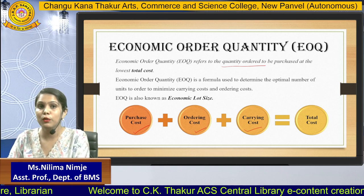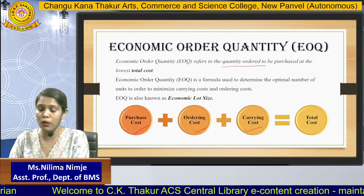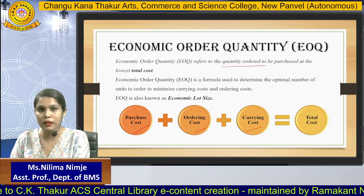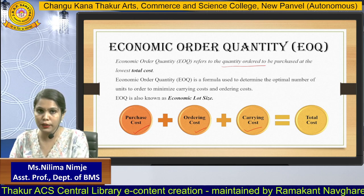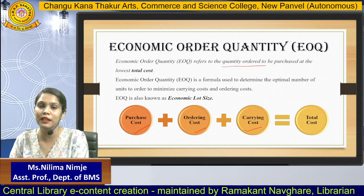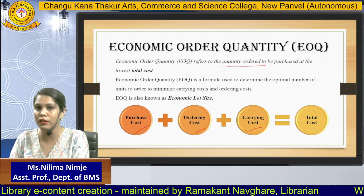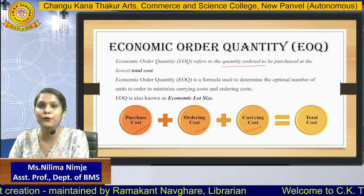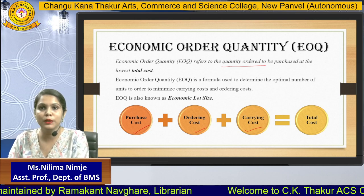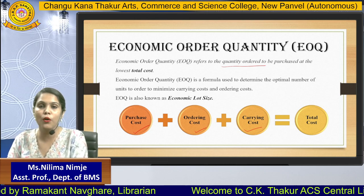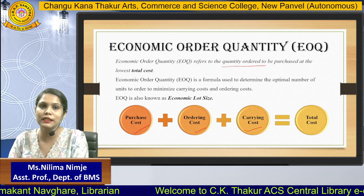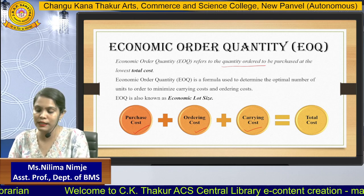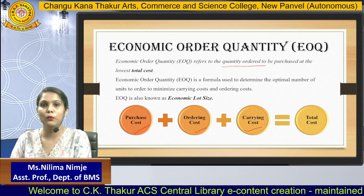All three together form the total cost. So whenever you are ordering a certain quantity, that quantity should be ordered at a completely minimum. The carrying cost and the ordering cost should be minimum. So Economic Order Quantity is a formula used to determine the optimal number of units to order to minimize the carrying cost and the ordering cost. EOQ is also known as Economic Lot Size.